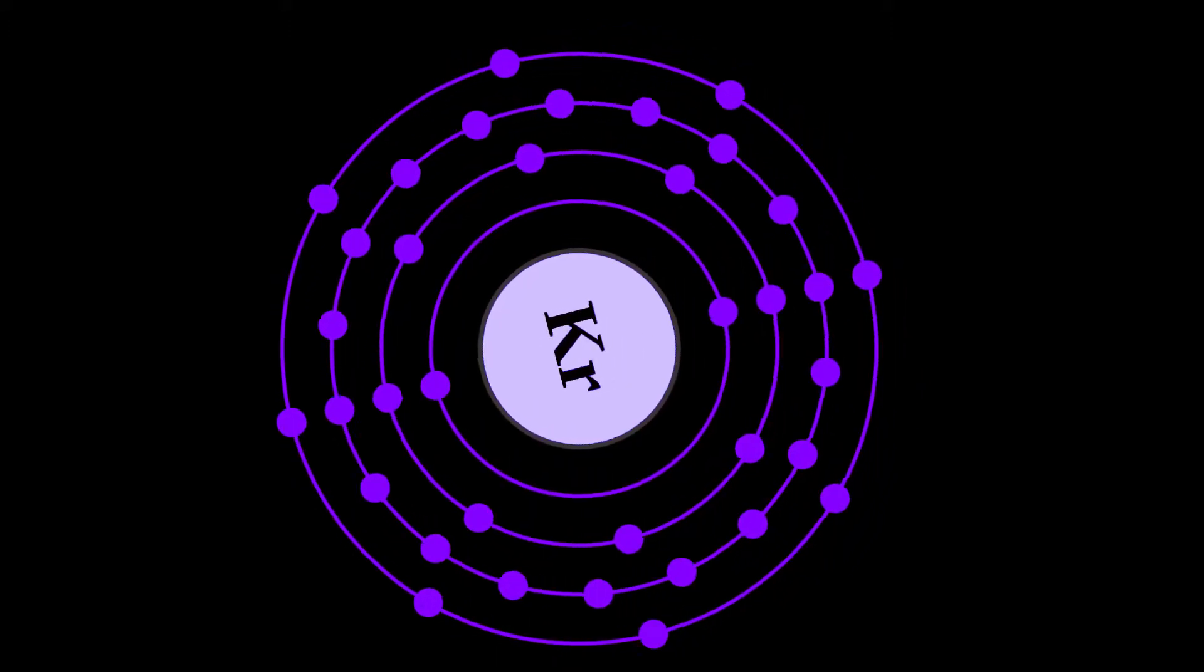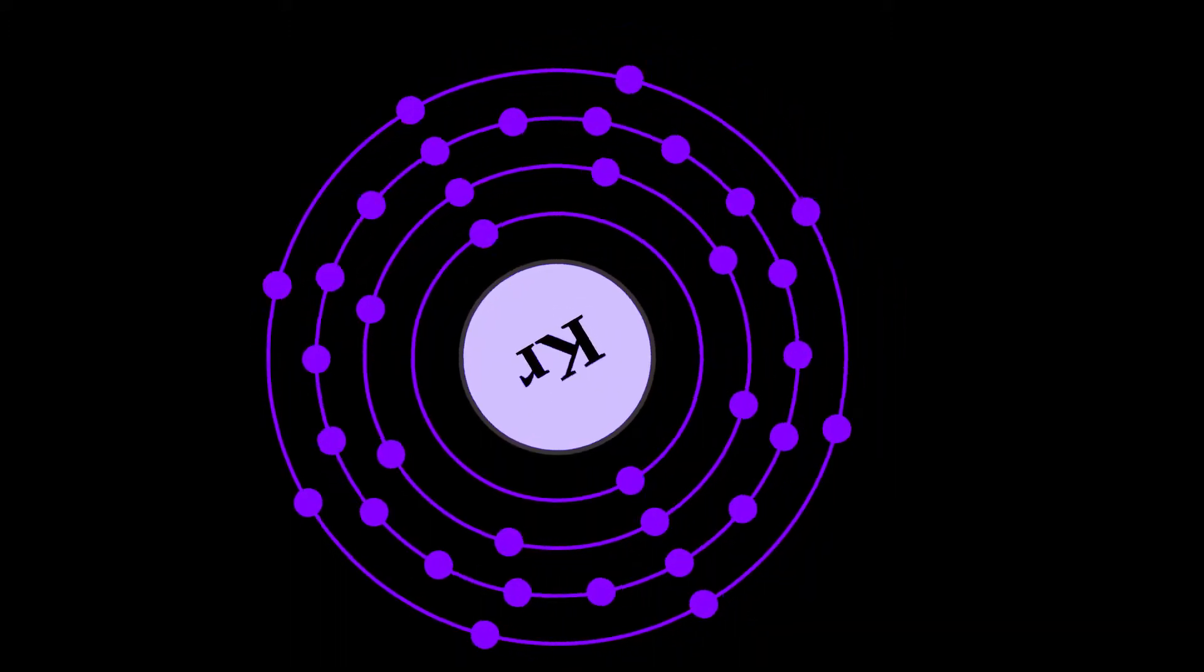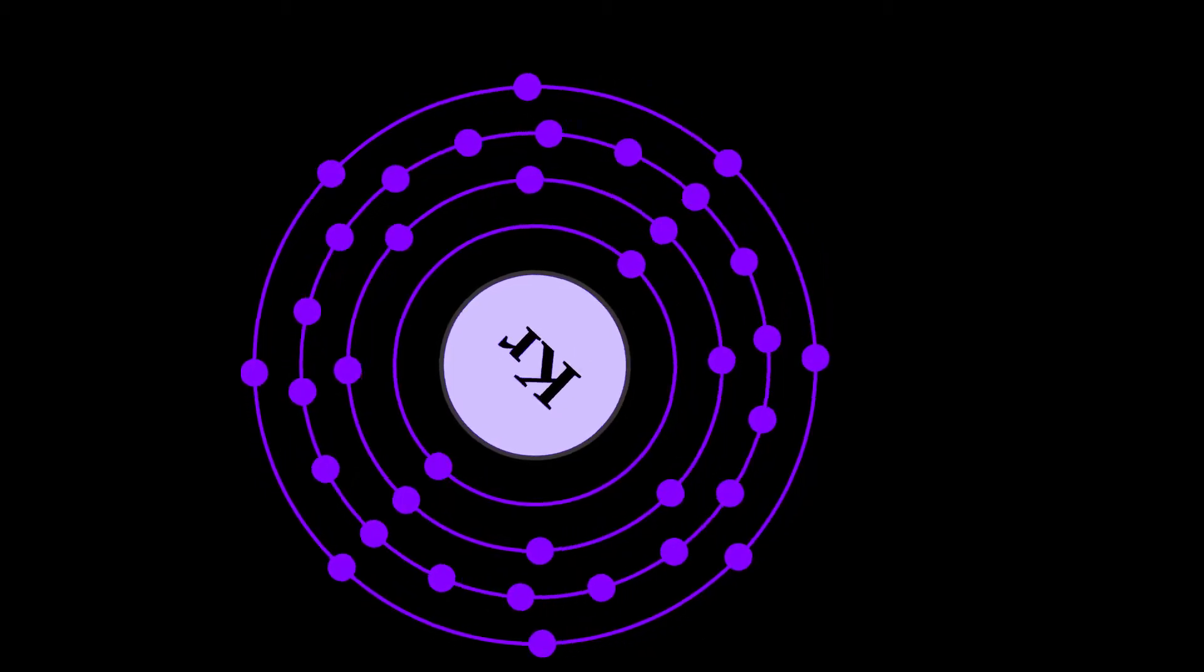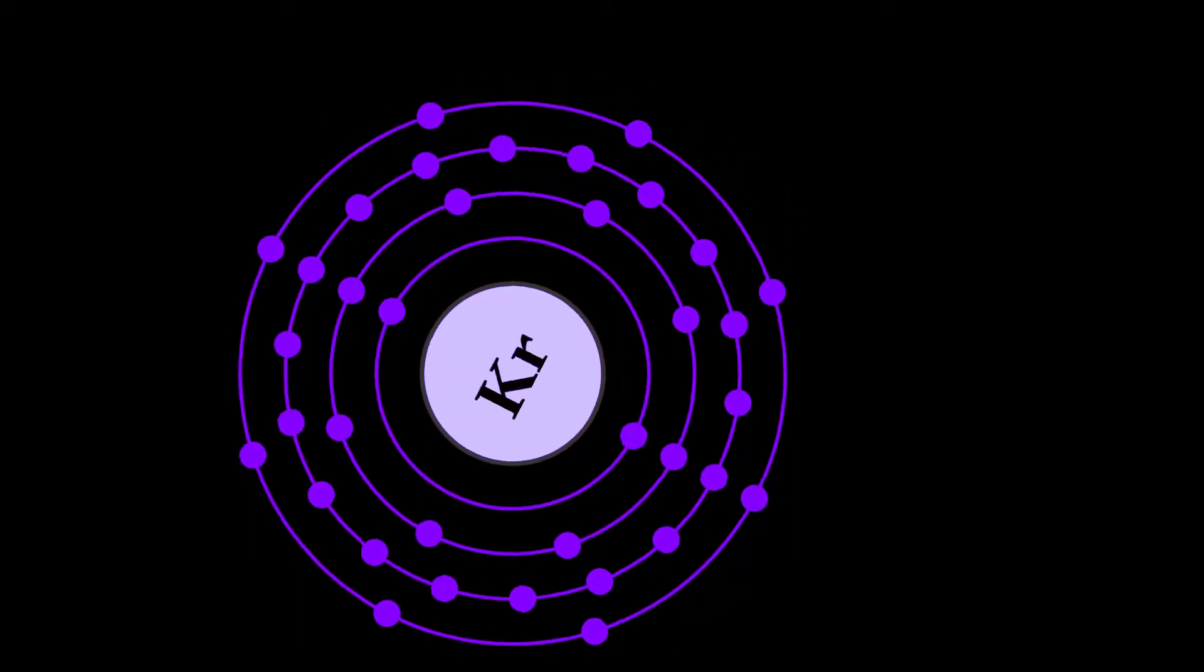Krypton, from ancient Greek kryptos, the hidden one, is a chemical element with symbol Kr and atomic number 36.